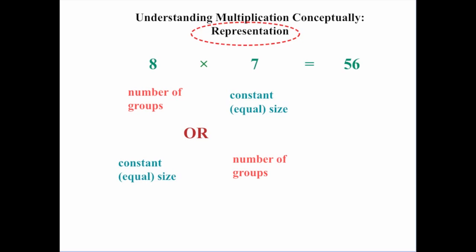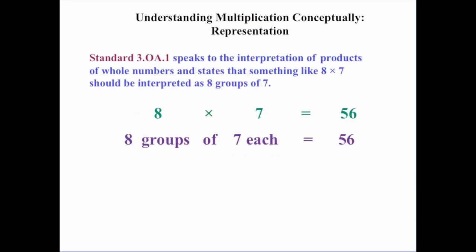If you do research, there's no national consensus. There's no definite answer out there that says one way or the other is correct. Standard 3.OA.1 does speak to the interpretation of products of whole numbers and states that something like 8 times 7 should be interpreted as 8 groups of 7. So that's the way that we're going to approach it, where the first number tells us how many groups and the second number will tell us the size of the group.